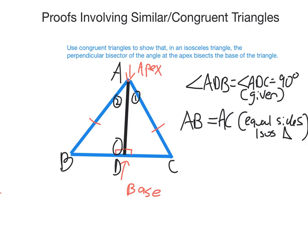So that's an equal angle and an equal side. But to show congruence, I need a third thing — another equal angle or an equal side. I know that the base angles of the isosceles triangle will be equal to each other, so I could use that. Or I could use the fact that AD is in both triangles; therefore it's going to be equal in length in both triangles. AD is common.